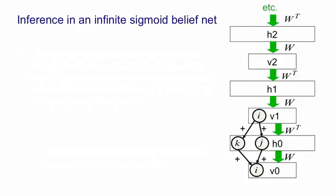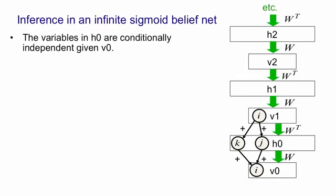Now let's look at inference in an infinitely deep sigmoid belief net. In inference, we start at V0 and then we have to infer the state of H0. Normally this would be a difficult thing to do because of explaining away — if hidden units K and J both had big positive weights to visible unit I, then when we observe that I is on, K and J become anti-correlated in the posterior distribution. That's explaining away. However, in this net K and J are completely independent of one another when we do inference given V0, so the inference is trivial. We just multiply V0 by the transpose of W, put whatever we get through the logistic sigmoid, and sample, giving us binary states for the units in H0.